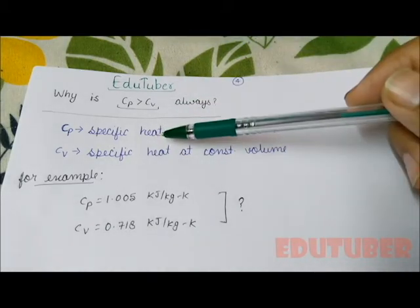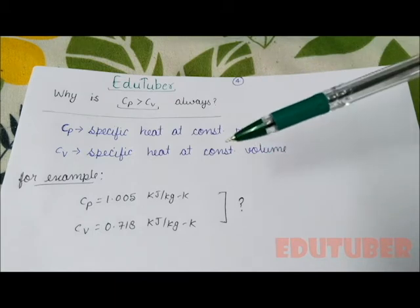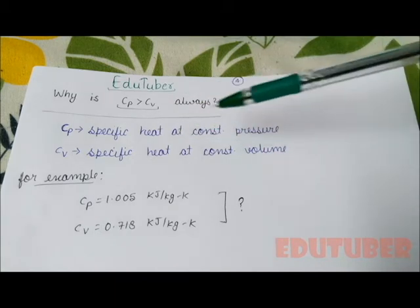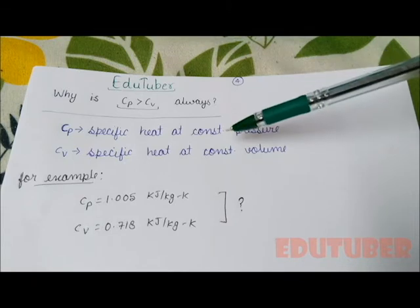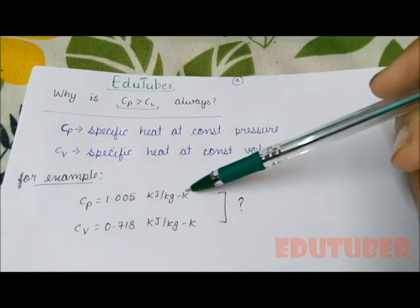Also, you can click on the right section of the screen. So let's begin. Specific heat at constant pressure is always greater than specific heat at constant volume. For example, if we talk about specific heats of air.